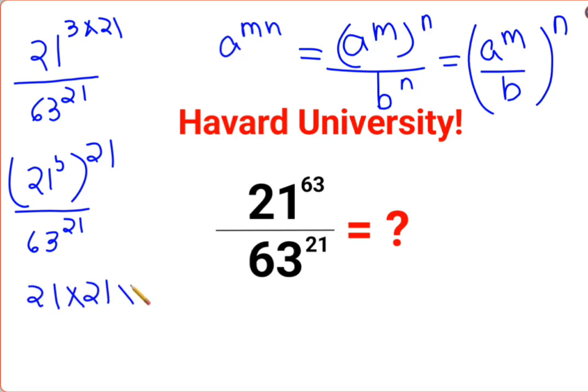21 raised to 3 can be written as 21 multiplied by 21 multiplied by 21 upon 63, the whole raised to 21.